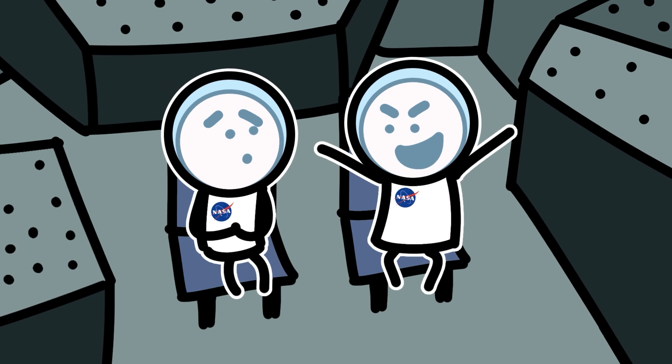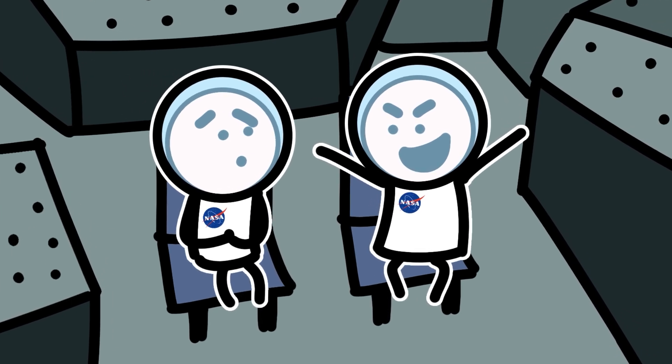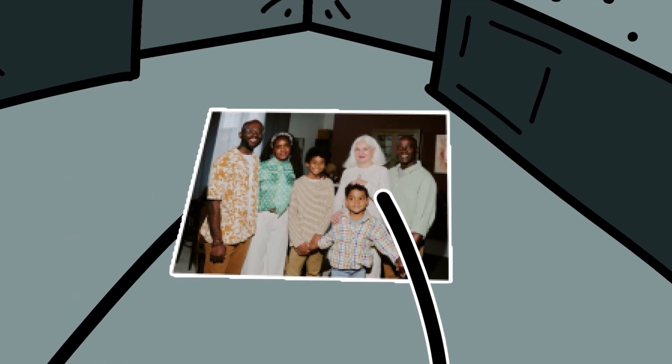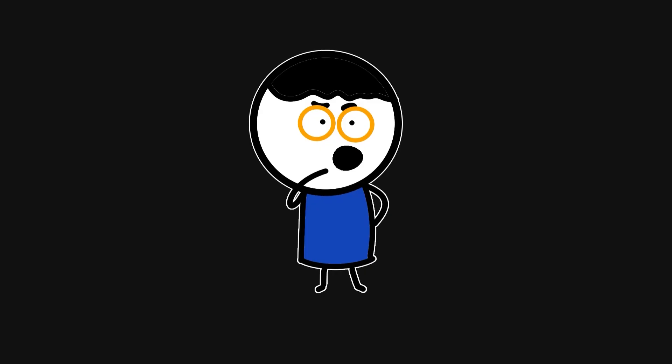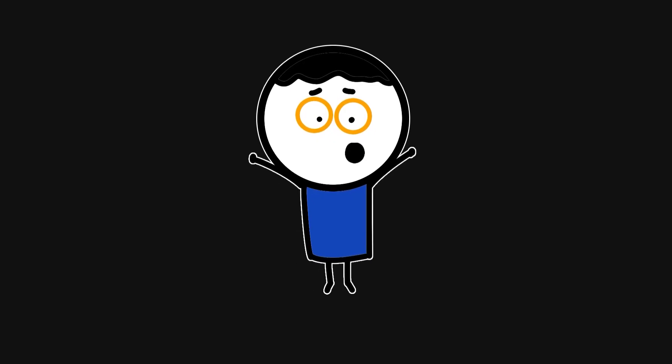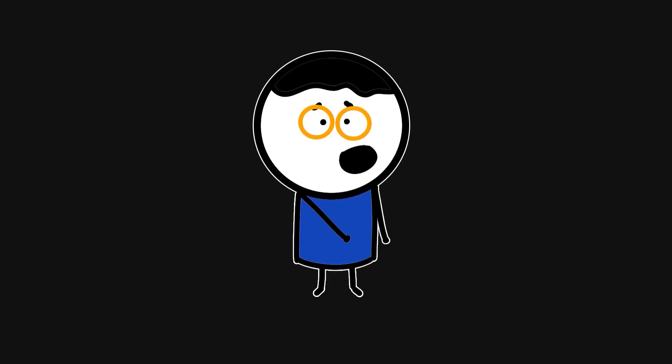Inside the shuttle, the seven astronauts smile, joke, and prepare for re-entry. They look forward to seeing their families, to sharing their success. But what they didn't know was that home was already out of reach since the start of the mission.